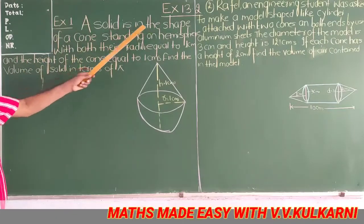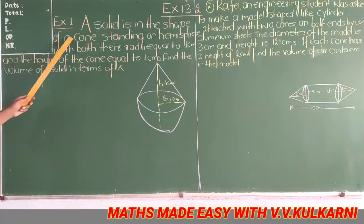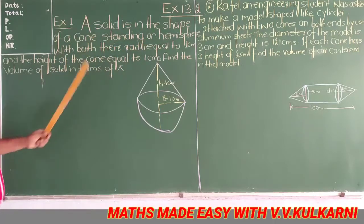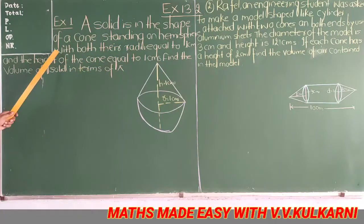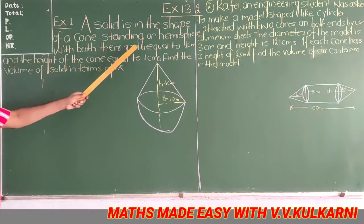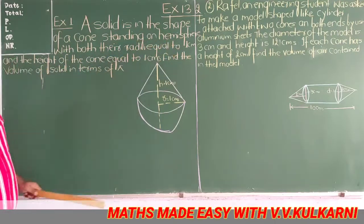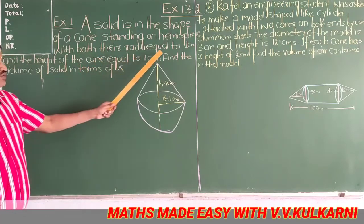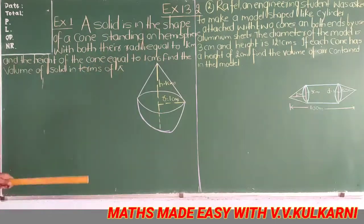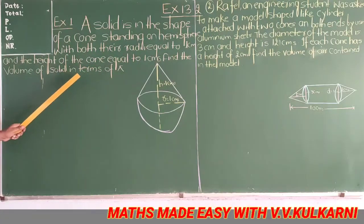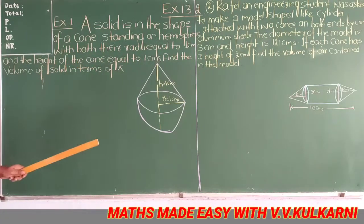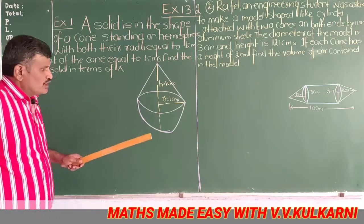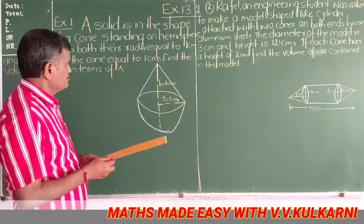A solid is in the shape of a cone standing on a hemisphere with both their radii equal to 1 centimeter and the height of the cone equal to 1 centimeter. Find the volume of the solid in terms of pi. What does it mean?